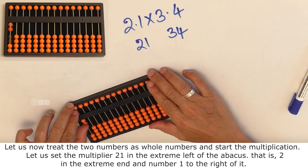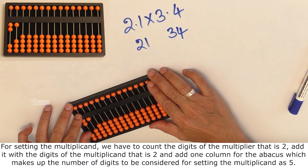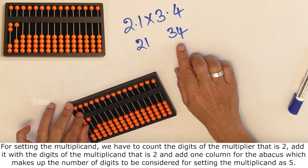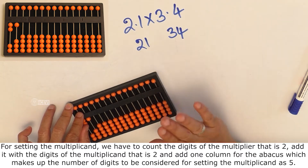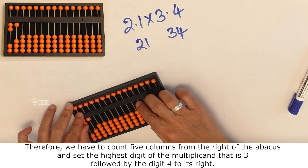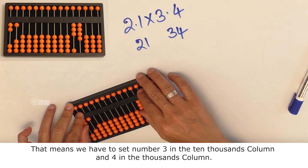Let us set the multiplier 21 in the extreme left of the abacus — that is 2 in the extreme end and the number 1 to the right of it. For setting the multiplicand, we have to count the number of digits of the multiplier, that is 2, add it with the digits of the multiplicand, that is 2, and add 1 column for the abacus, making 5 columns to be considered. Therefore, we count 5 columns from the right and set the highest digit of the multiplicand: 3 in the 10,000 column and 4 in the 1,000 column.